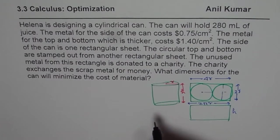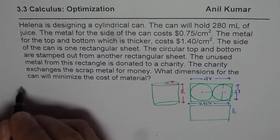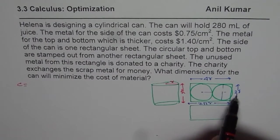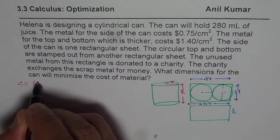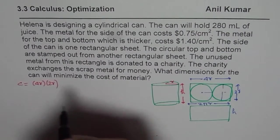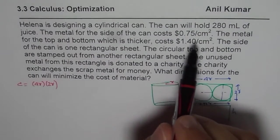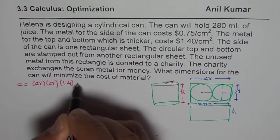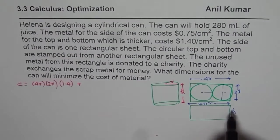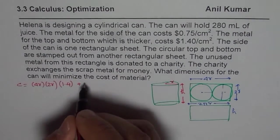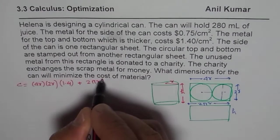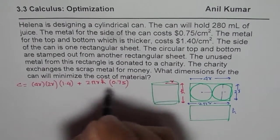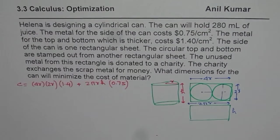So we can write cost as equal to, so the cost will be cost of top and bottom. So the area is 4 R times 2 R. So area is 4 R times 2 R times the cost is 1.4. So we will multiply this by 1.4. Plus the cost of this portion will be 2 pi R times H. So it is 2 pi R H times cost of 0.75. So that is how you get your cost.